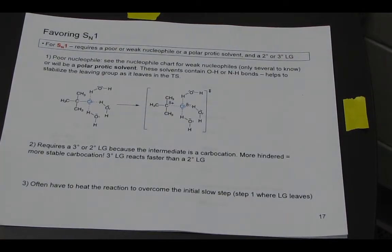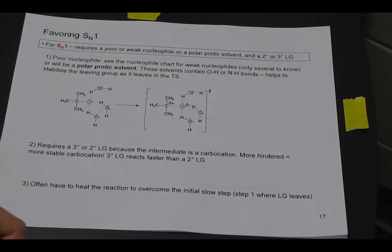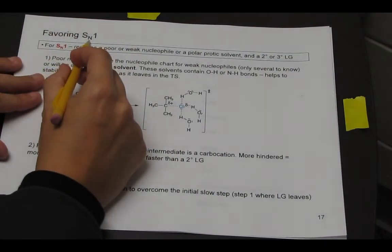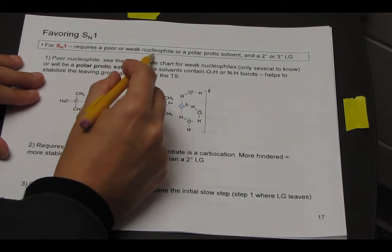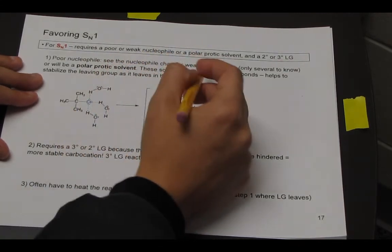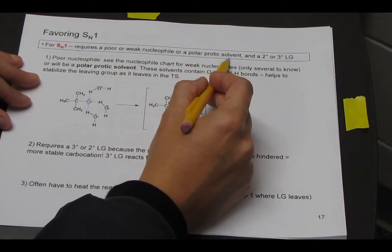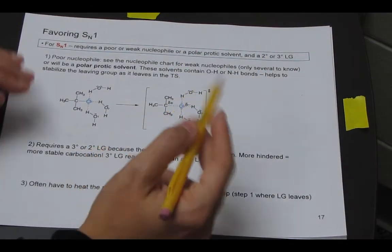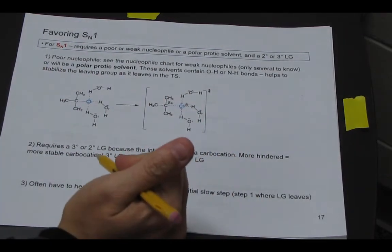Let's talk about the factors that favor SN1. And they're kind of complementary to what favors SN2. So for SN1, we want a poor or weak nucleophile. And we want a polar protic solvent. So it's a different solvent. And we want a secondary or tertiary leaving group. So it's a little bit different than SN2.